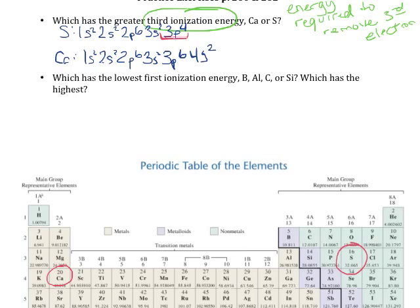For calcium, when we remove that third electron, we remove two from the 4s orbital, and that third one is actually going to come out of the 3p orbital. For calcium, everything up through the third energy level is core — calcium only has two valence electrons in the 4s. So not only are we removing valence electrons, but we're also removing one core electron. Because we're removing one core electron, the third ionization energy is going to be highest for calcium.